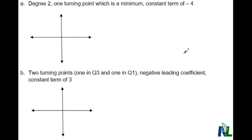So let's look at part A. In part A, it says we need a degree of 2, one turning point which is a minimum, and a constant term of negative 4.